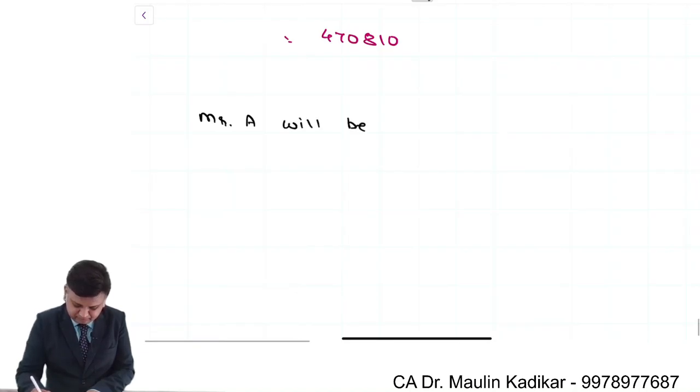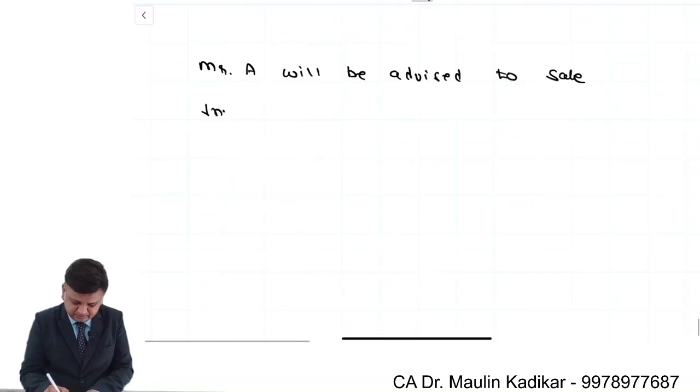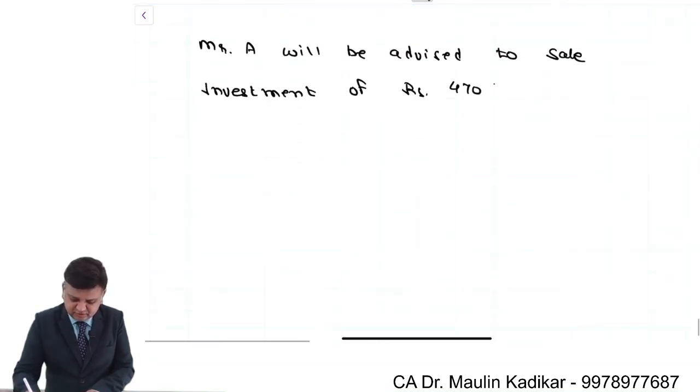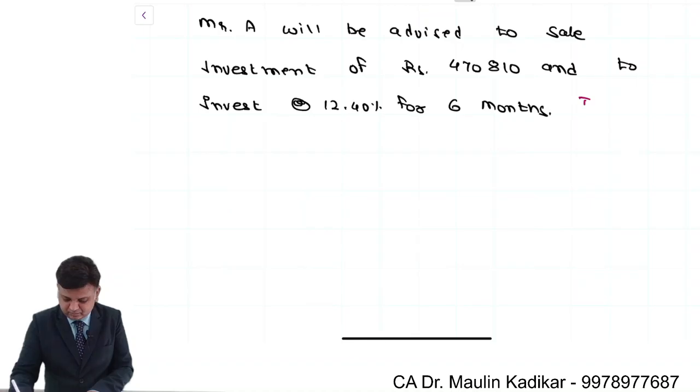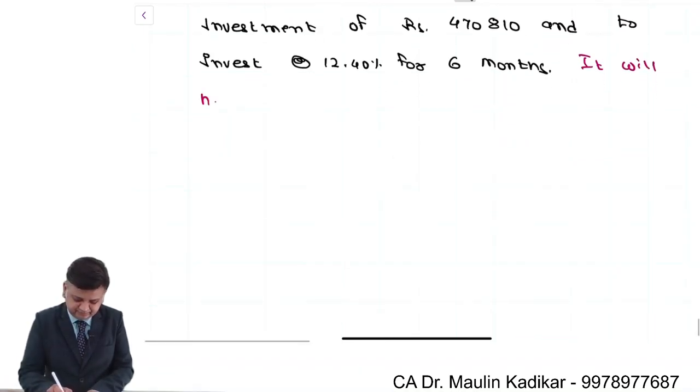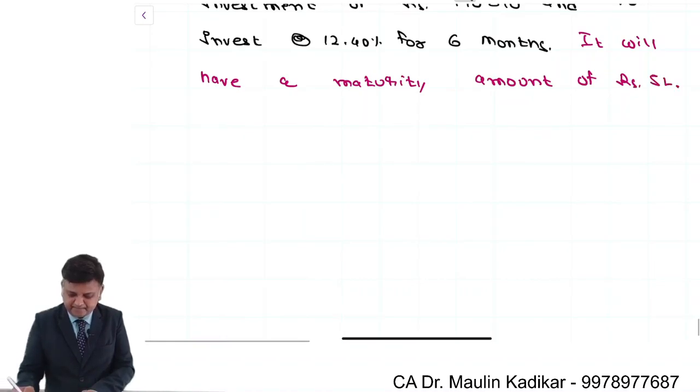And further, Mr. A will be advised to save investment of rupees 470810 and to invest at the rate of 12.4% for 6 months. It will have a maturity amount of rupees 5 lakhs.